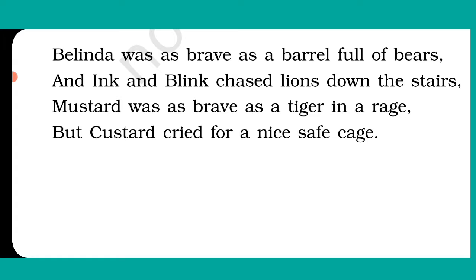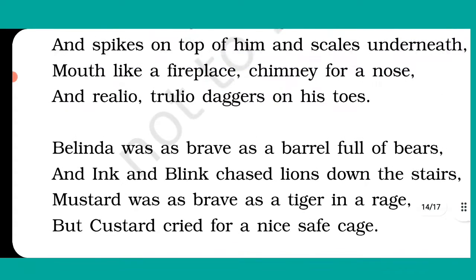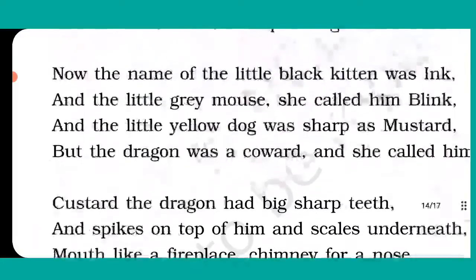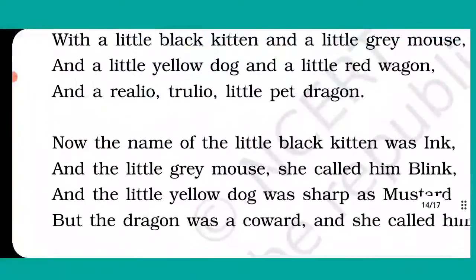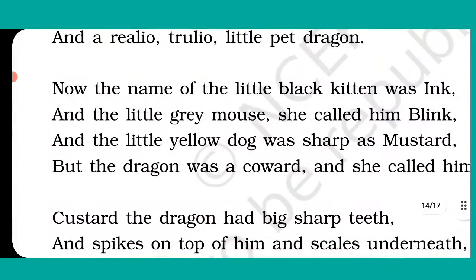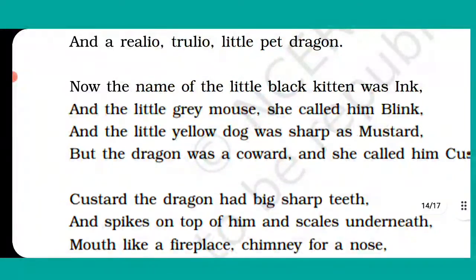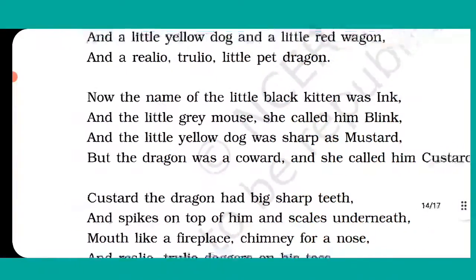In stanza 2, it is written: the name of the little black kitten was Ink, and the little grey mouse she called him Blink, and the little yellow dog was sharp as mustard, but the dragon was a coward and she called him Custard.